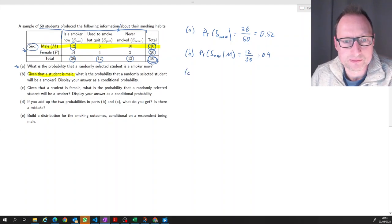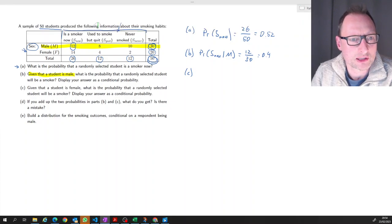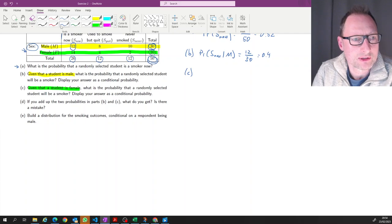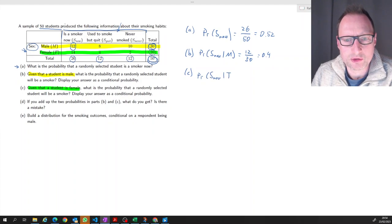Part C: given that a student is female, what's the probability that the randomly selected student will be a smoker? So let's get a different highlighter. Now we're asking, given that the student is female, so now we are only thinking about these observations, these green highlighted observations. And the probability we are asking is: what's the probability that someone is smoking now, given we have a female? So here we're having 14 over 20, which is 70 percent.